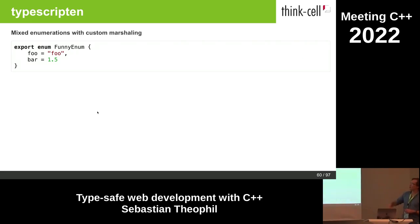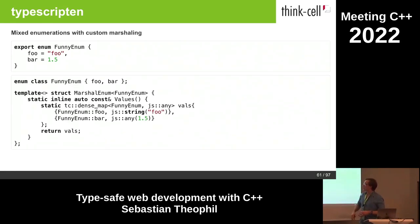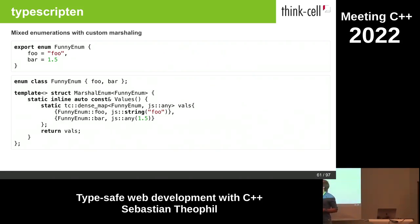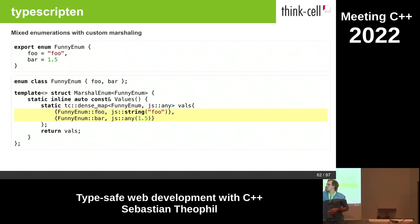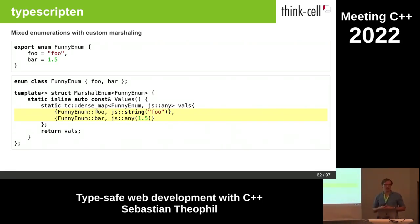There are mixed enumerations in TypeScript. We can translate these to C++ by exploiting a customization point for marshalling from C++ to the JavaScript world. We write a classic C++ enumeration and introduce a customization point that tells us: for enumeration FunnyEnum, we create a map from the C++ enumeration to the value it should have in JavaScript, and then look that up and marshal that JavaScript value to the JavaScript world.